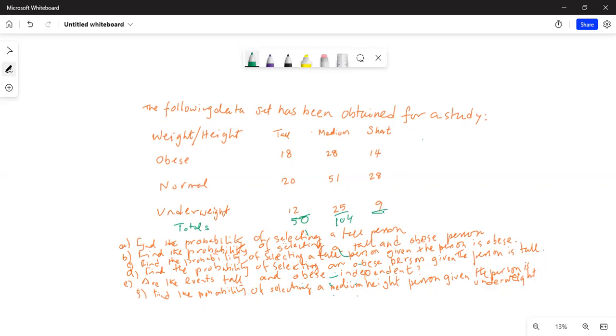So this is the total of this column, 50. This is the total of this column, 104. And the total of this column is 14 plus 28 is 42, plus 9 is 51. Now we will total the rows.